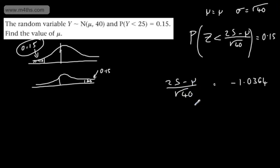So do a bit of messing about with it and rearranging it. What we're going to have, 25 minus μ is going to be equal now to root 40. And then we're going to have that multiplied now by, so let's put minus there, 1.0364.